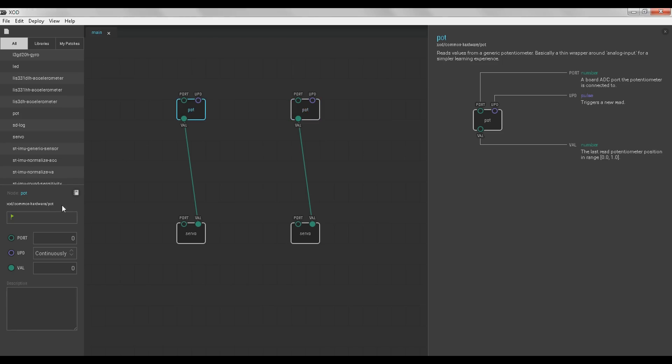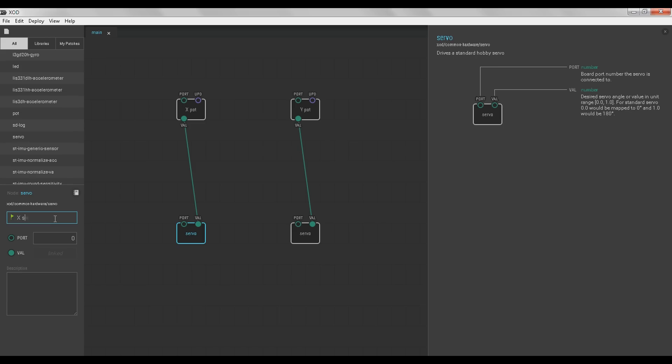Next for the sake of clarity, we should start giving our potentiometers and servos meaningful names. And we do that by clicking on the nodes, and then typing names into the properties section on the left. We're just going to call them x and y potentiometers and servos.